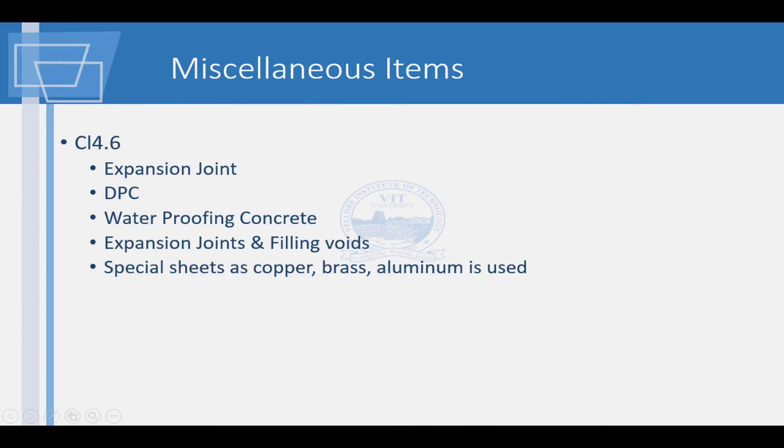Clause 4.6 gives the methods of measuring expansion joints, damp-proof courses and waterproofing concrete.